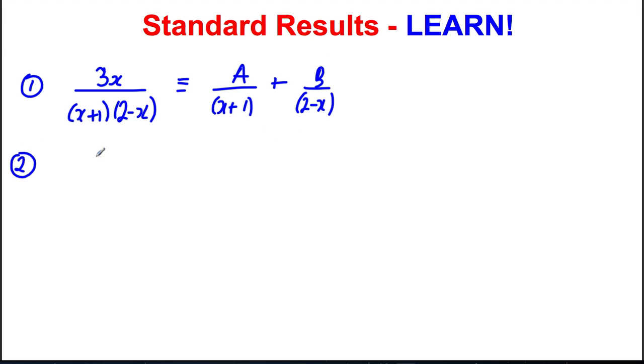By extension, suppose you had three distinct factors like that. Then you would have a number over the first one plus a number over the second one plus another number over the third one.